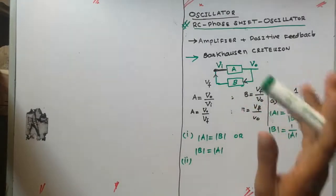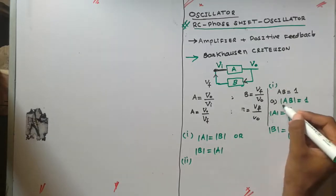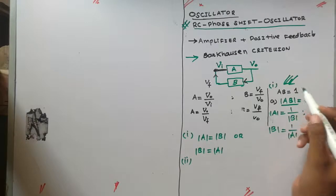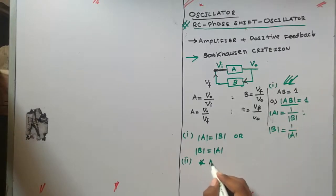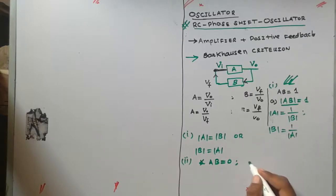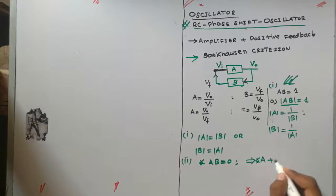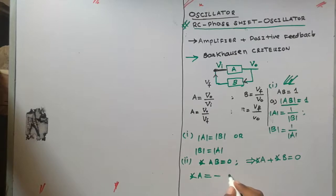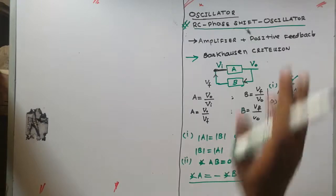The second condition is that the phase of AB must equal zero. If the magnitude equals one but the phase is 180°, then the product equals minus one, not one. So the phase of A plus the phase of B must both sum to zero, meaning the phase of A must equal the negative of the phase of B, so the total phase equals zero. These are the criteria for an amplifier to act as an oscillator.